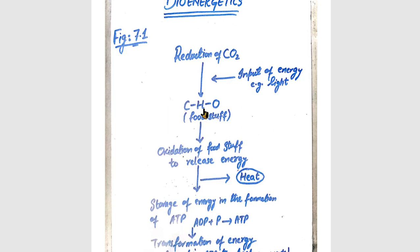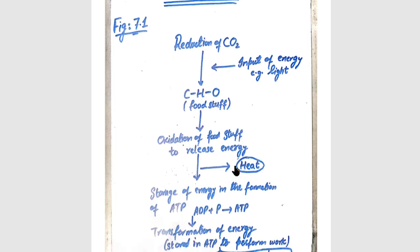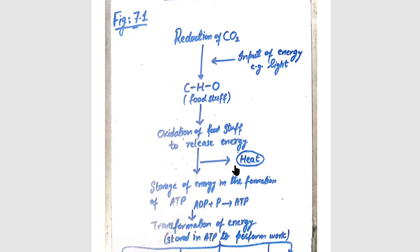The next step is that this food undergoes oxidation. The bonds release kinetic energy. This kinetic energy is transformed into two parts: one is heat energy, and the other is stored in ATP molecules as potential energy.